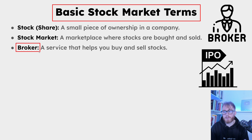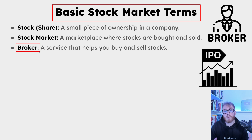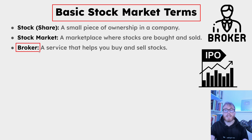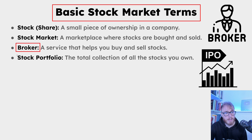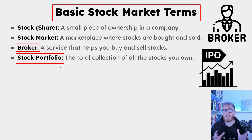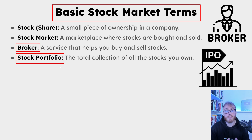A stock portfolio is the total collection of all the stocks you own. For example, if you own some Apple, some Nvidia, and some Tesla, all three together make up your stock portfolio. Next is the term volatility — how much and how quickly the price of a stock or other asset like cryptocurrency or forex changes.